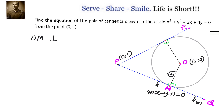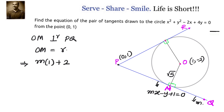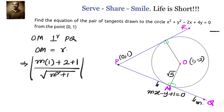Now, the perpendicular distance from center O to line PQ is computed. PQ is mx - y + 1 = 0 and center O is (1, -2). That distance should equal the radius √5. Using the formula |ax₁ + by₁ + c| / √(a² + b²), substituting the center point into the line gives |m(1) - (-2) + 1| / √(m² + 1), which is |m + 3| / √(m² + 1) = √5.